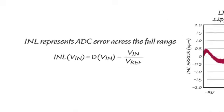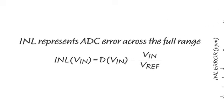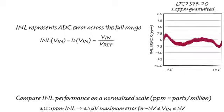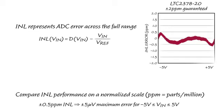INL characterizes A2D error, excluding offset and gain errors, as a function of the input voltage. It tells you the difference between the code you actually get from the A2D for a given input voltage and the ideal code you would get from a perfectly linear A2D. It is preferable to compare A2D errors on a normalized scale, such as parts per million.